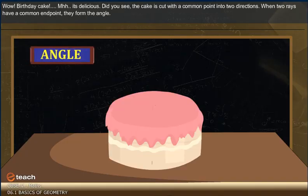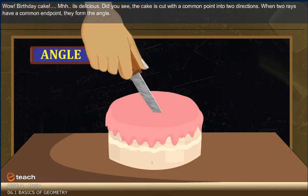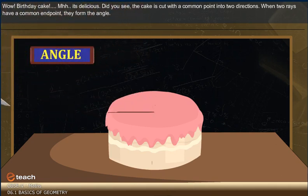Angle: Wow! Birdie cake! It's so delicious! Did you see? The cake is cut with a common point into two directions. When two rays have a common endpoint,